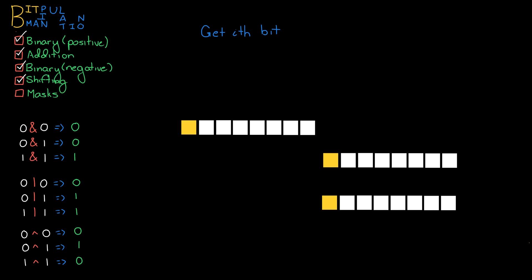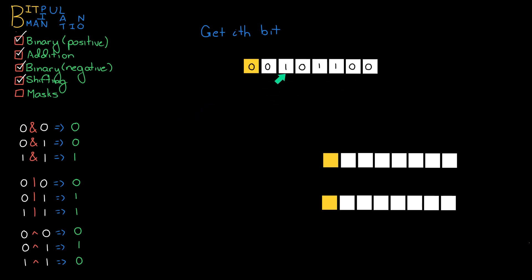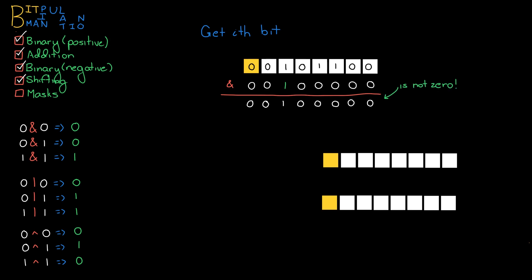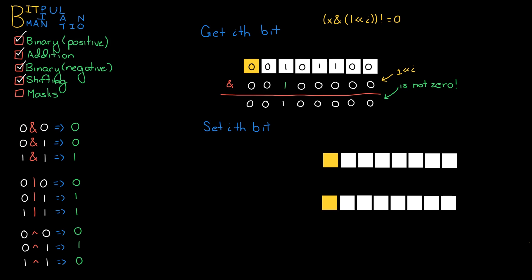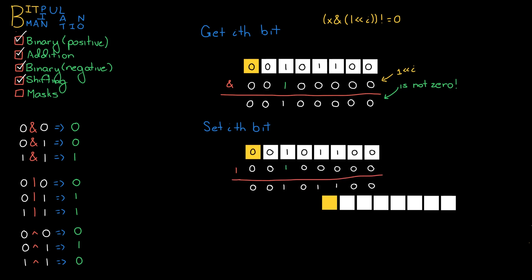So now let's turn to how you would get a particular bit in a number — how do we figure out if a specific bit was a 1 or a 0? Well, if we create a mask — a number that has a 1 only in that one bit position — and we AND it with the original number, that'll indicate whether that value is a 1 or a 0. Because if there's a 0 there, the whole result will be 0; otherwise it'll be something bigger than 0. That mask can be created by taking 1 and shifting it to the left by i spots. So to figure out if the i-th spot is a 1 or 0, we compare: do an AND of X with that mask and check if it does not equal 0. For setting the i-th bit, we create the exact same mask and just OR it with the original value, which ensures that i-th bit is set.